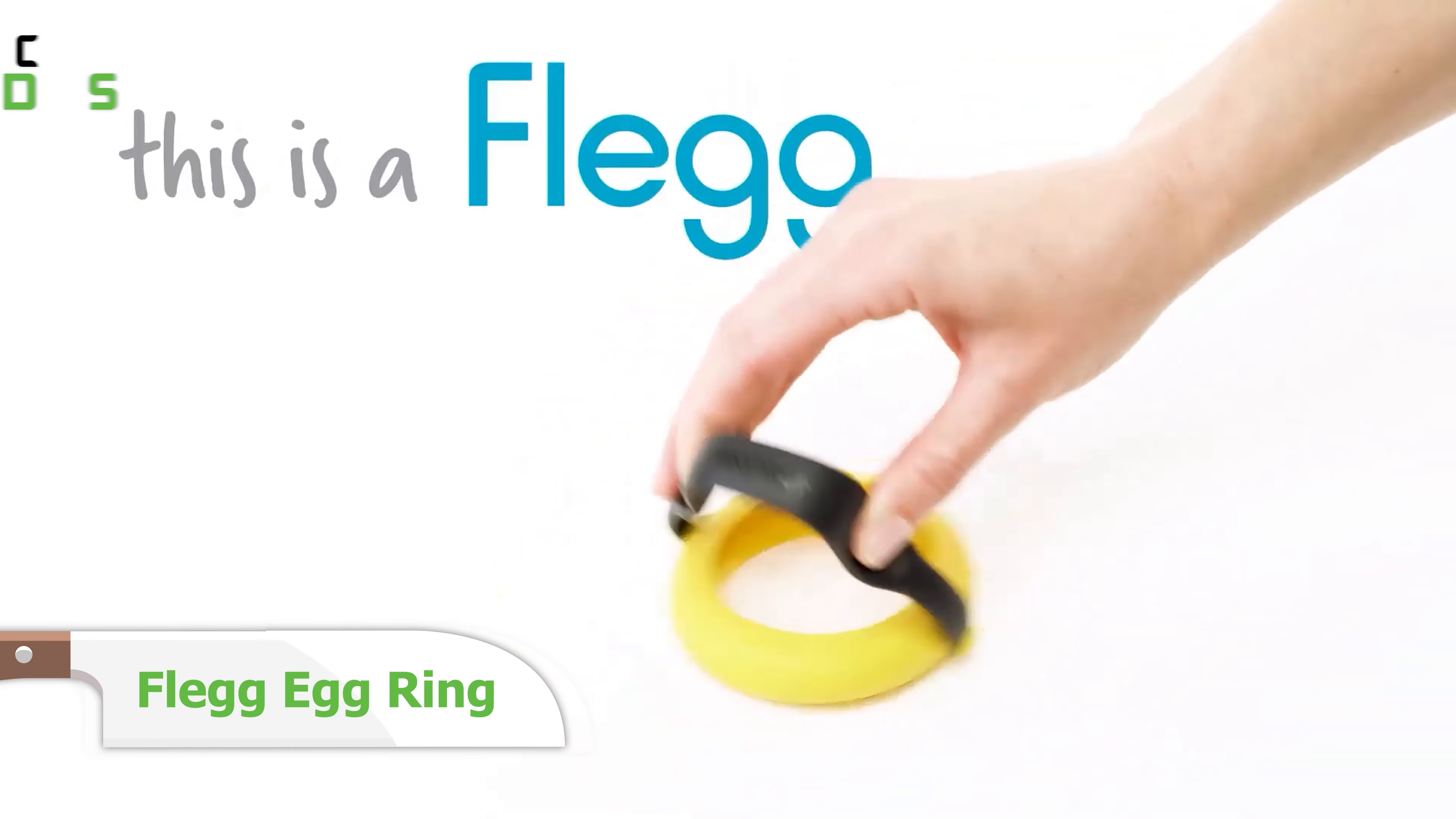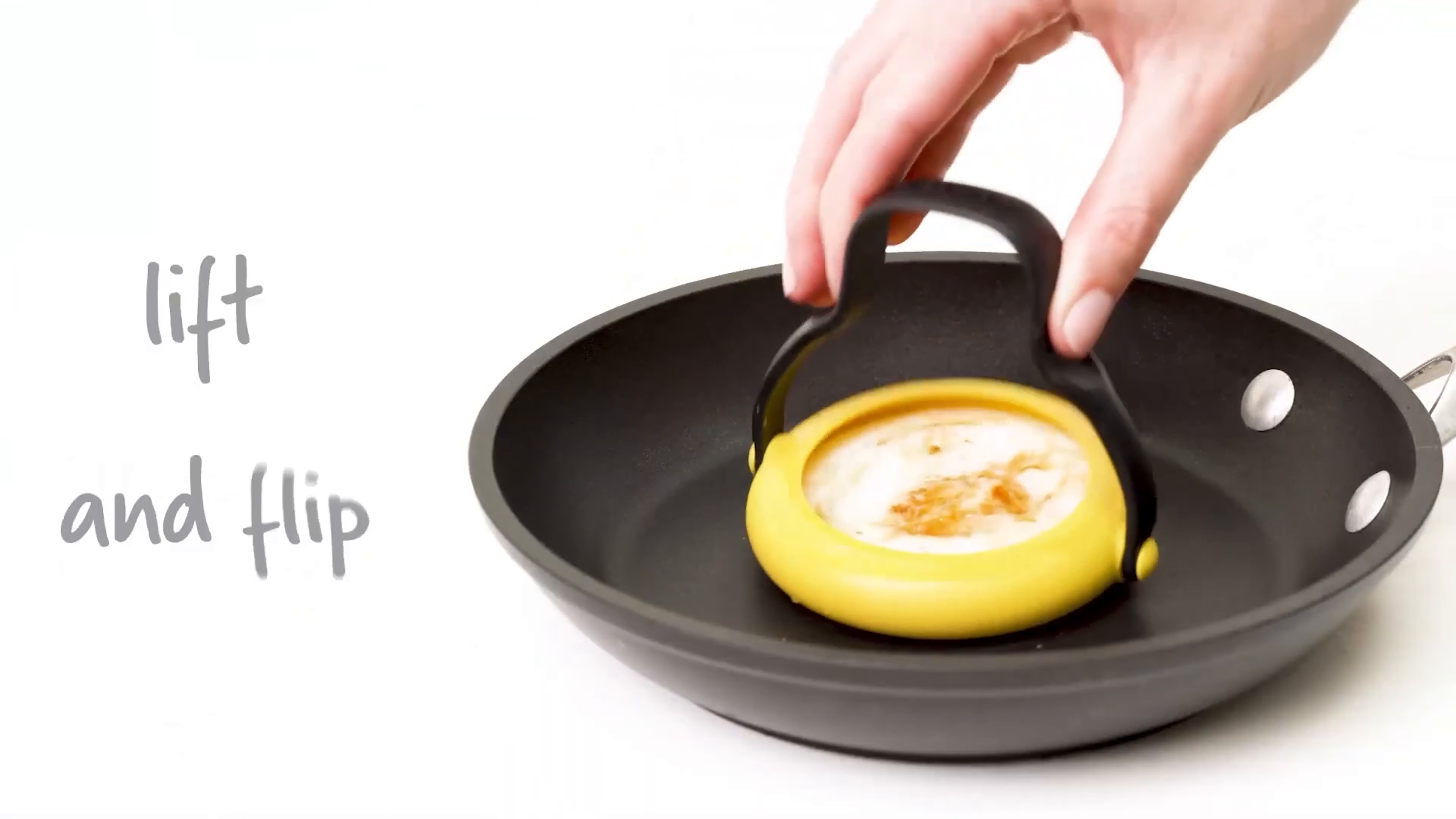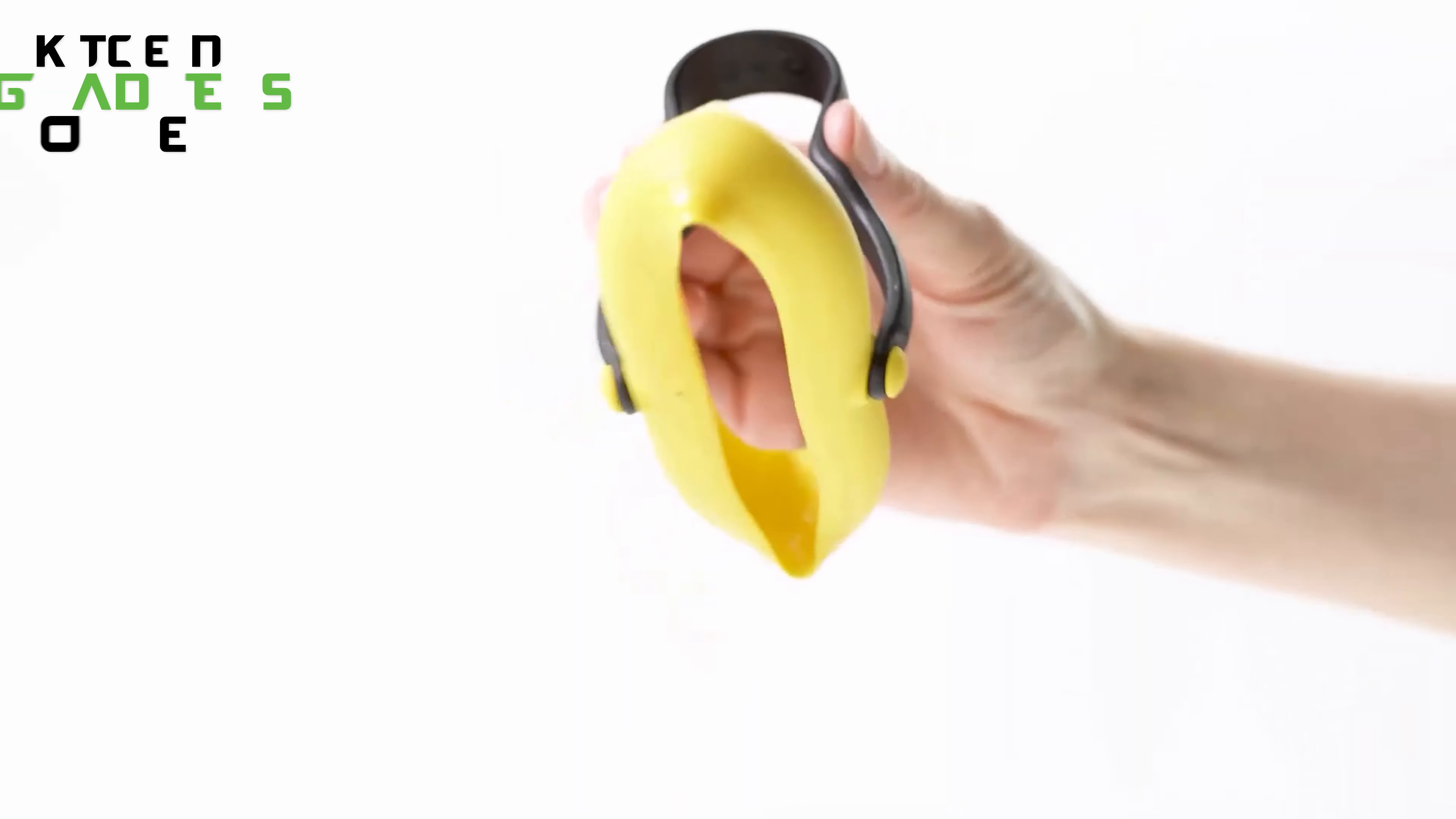Breakfast just got a whole lot easier with the Fleg Egg Ring. This ingenious little gadget is the key to perfect over-easy eggs every single time. Its unique C-channel ring design uses the egg's weight to seal it against the pan, ensuring a perfectly cooked egg that's easy to flip, lift, and serve. Simply squeeze the flexible handle, and the ring changes shape to release the cooked egg directly onto your toast or plate. No more broken yolks or messy transfers.